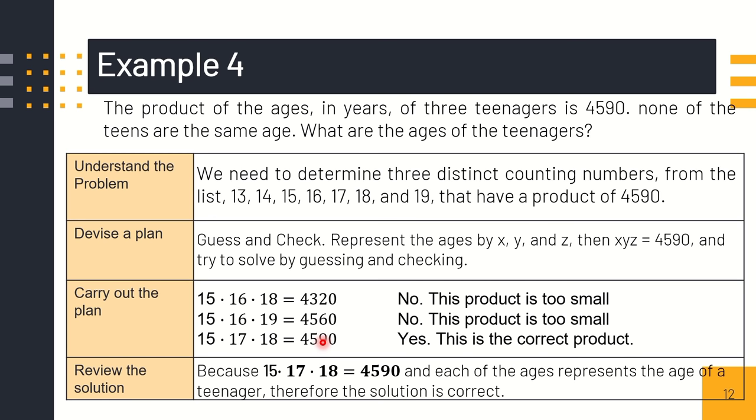The three ages of the teenagers that can produce a product of 4,590 are 15, 17, and 18. Because 15, 17, and 18, if we multiply them it's 4,590 and each of the ages represents the age of a teenager. Therefore, the solution is correct.